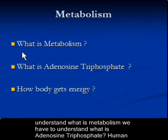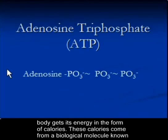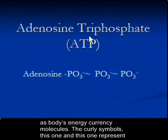Before we try to understand what metabolism is, we have to understand what adenosine triphosphate is. The human body gets its energy in the form of calories, and these calories come from a biological molecule known as adenosine triphosphate. The formula is shown here. These molecules are also known as the body's energy currency molecules.